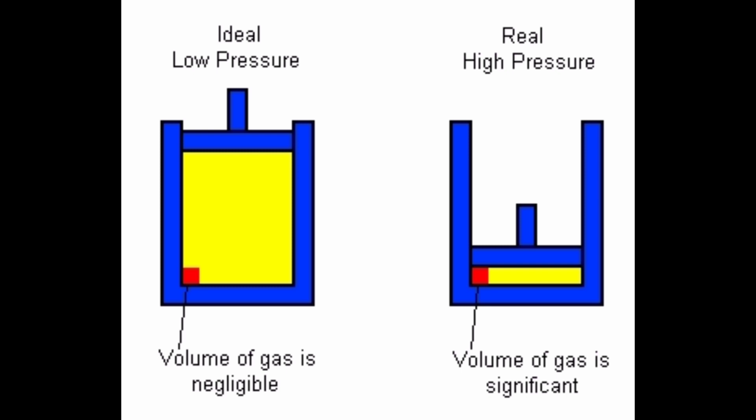Now, suggest a method to liquefy the atmospheric gases. Here you can see that when we increase the pressure, the volume of the gas will become very, very less. So by increasing pressure, and at the same time by decreasing the temperature, we can convert the atmospheric gases into liquid. By increasing the pressure as well as reducing the temperature.